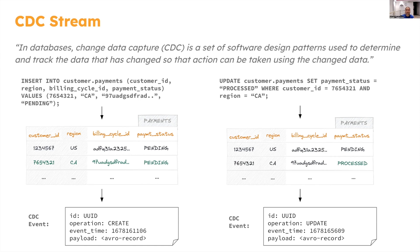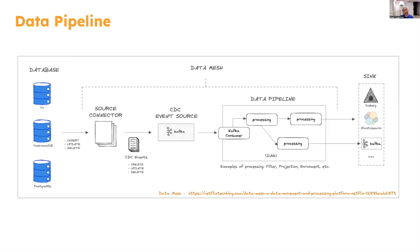You could imagine a series of mutations happening on this column family, generating a series of CDC events — that constitutes a CDC stream. This diagram shows a typical data pipeline with its fundamental building blocks. Usually there is a producer which sends data to a source, and in case of a CDC pipeline, the producer is a database. The next component is a source connector, responsible for extracting mutation information from the database and converting it into corresponding CDC events. The source connector could be deployed as a standalone component or running as part of a database instance, depending on the implementation.